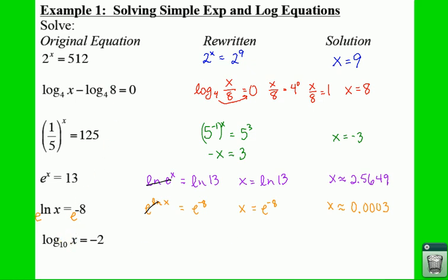On the last one, in order to get rid of the log on one side, this base comes over and bumps up the other side. So this 10 is going to move and bump up the negative 2. So we're going to get x equals 10 to the negative 2, which is just 1 over 10 squared. So you end up getting x equals 1 over 100.